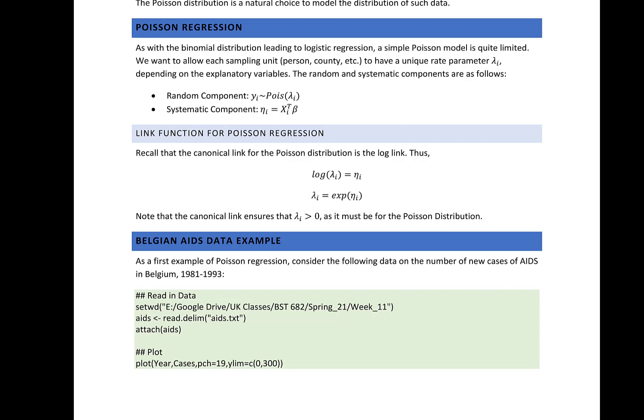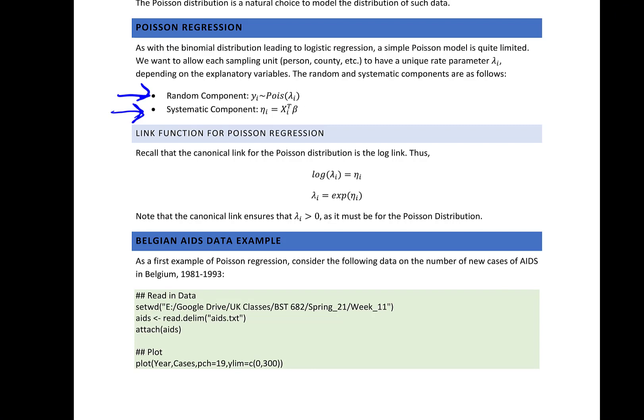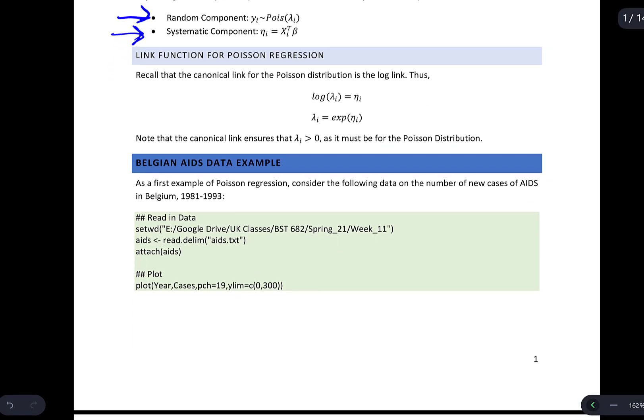When we think in terms of generalized linear models, we need our random and systematic components. Our random component is that y_i is distributed Poisson with lambda_i. Our systematic component ties in our explanatory variables with that mean: nu_i equals x-transpose beta — the same systematic component we saw with logistic regression. The canonical link for the Poisson distribution is the log link, so we end up with log(lambda_i) = nu_i, and lambda_i = e^(nu_i).